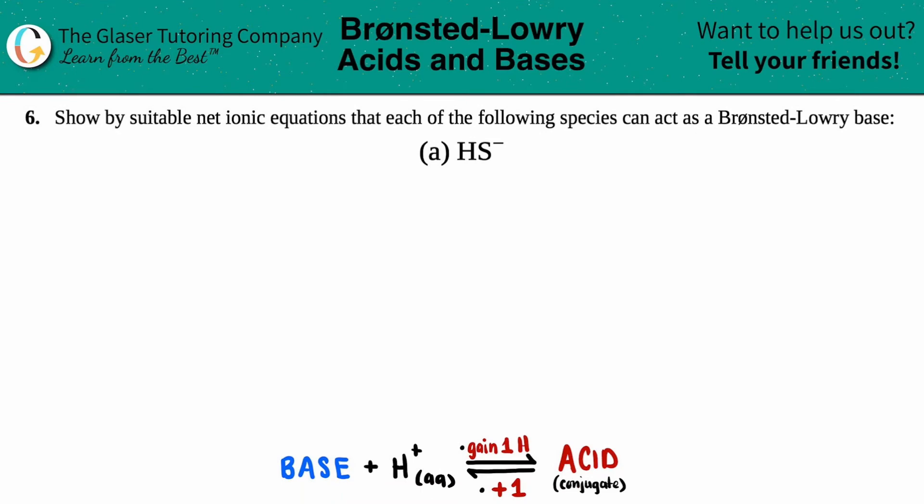Number six, show by suitable net ionic equations that each of the following species can act as a Brønsted-Lowry base. And then we have letter A out of the bunch. So in this case, we just have to write a net ionic equation stating how HS minus is going to act as a Brønsted-Lowry base.